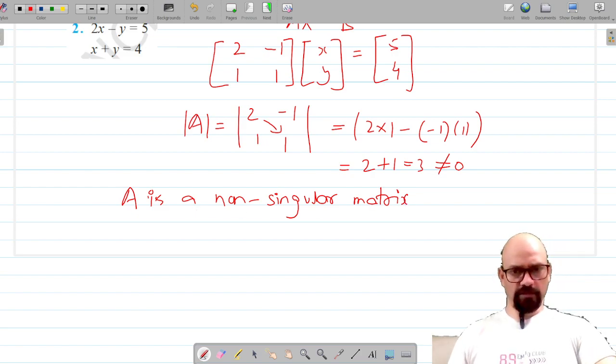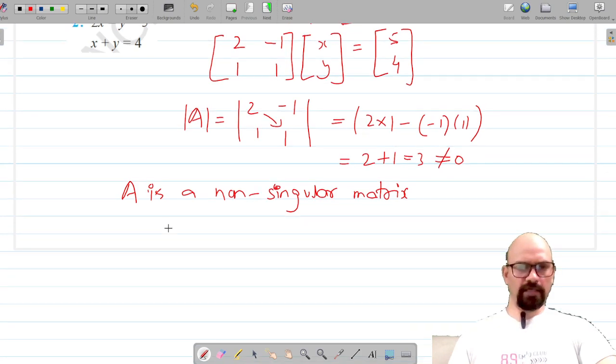A is a non-singular matrix, and that means the given system of linear equations is consistent because A is non-singular and the system is consistent. So we can write that the given system of equations has a solution.